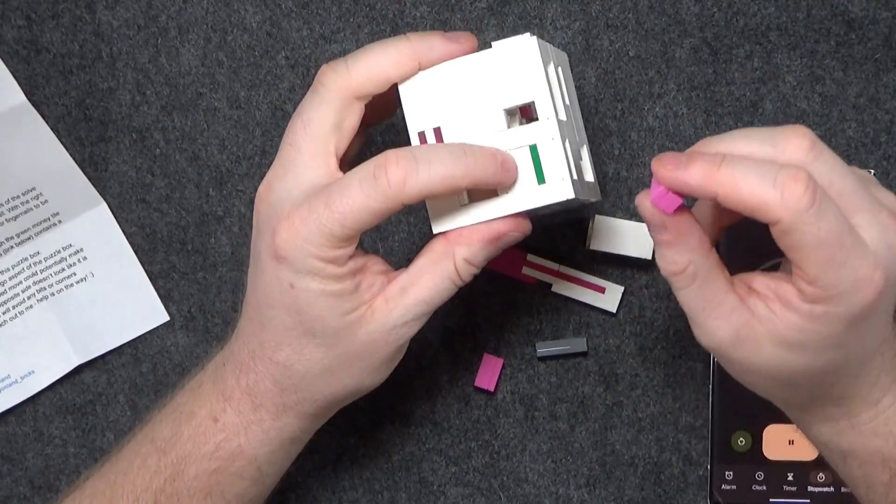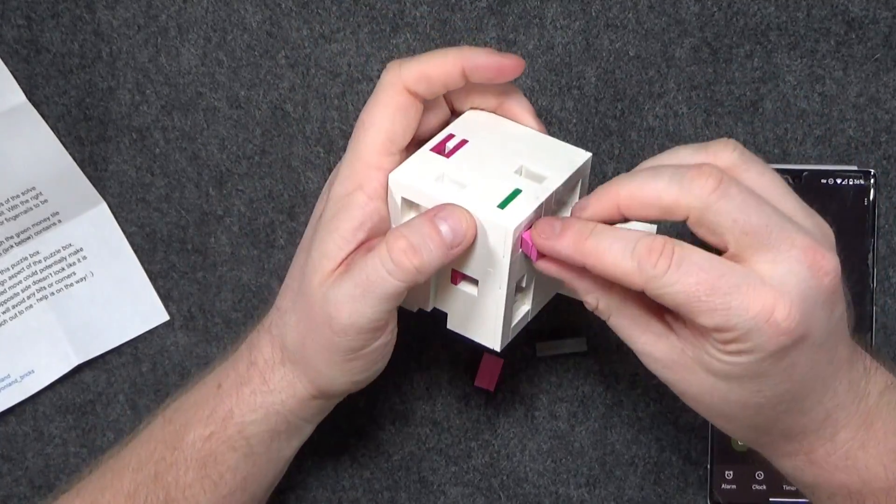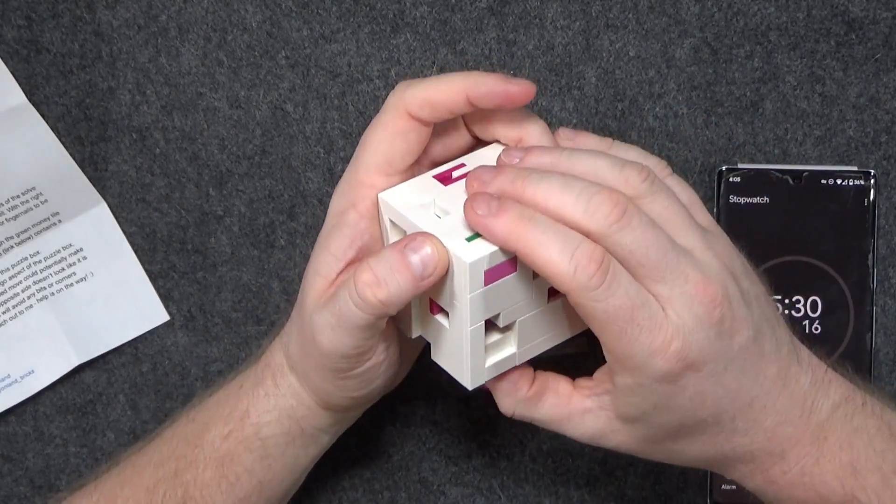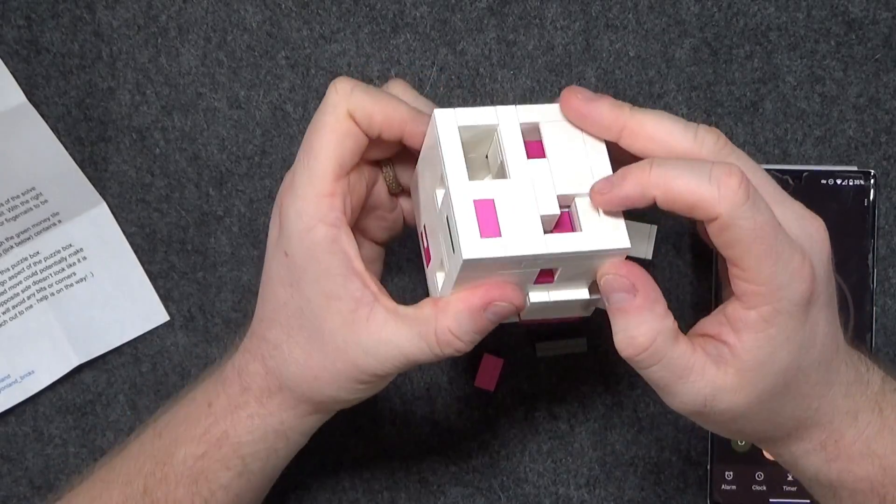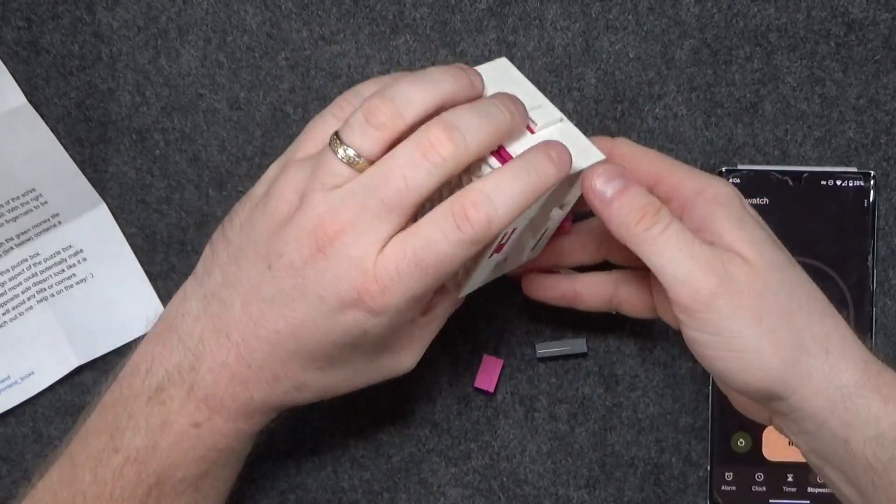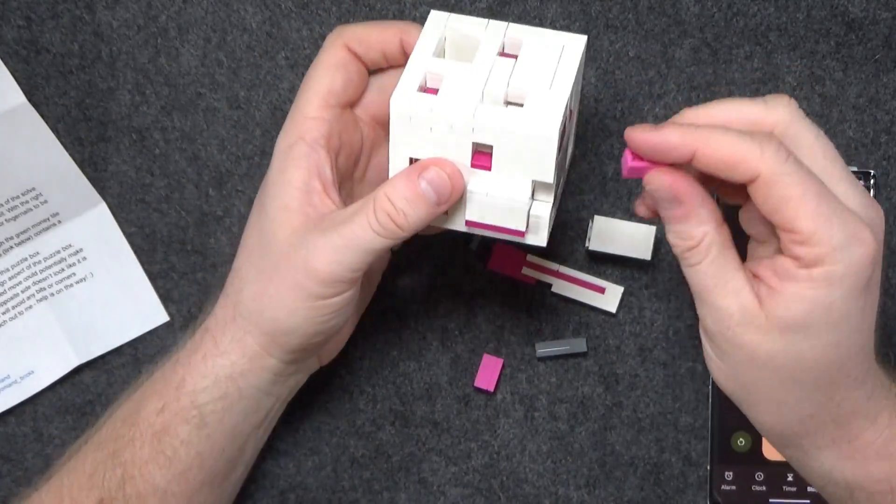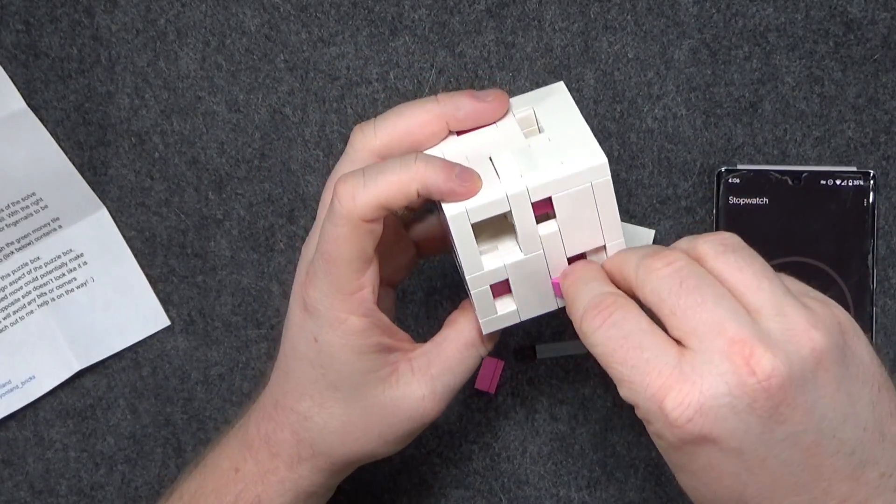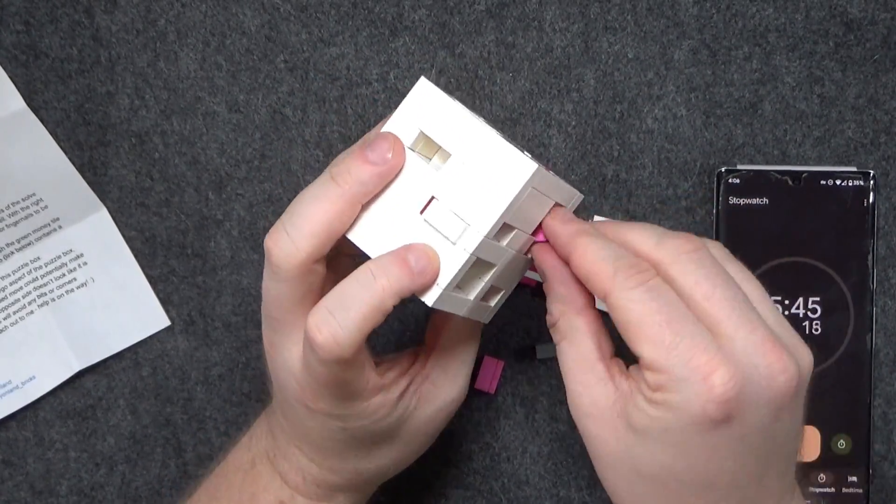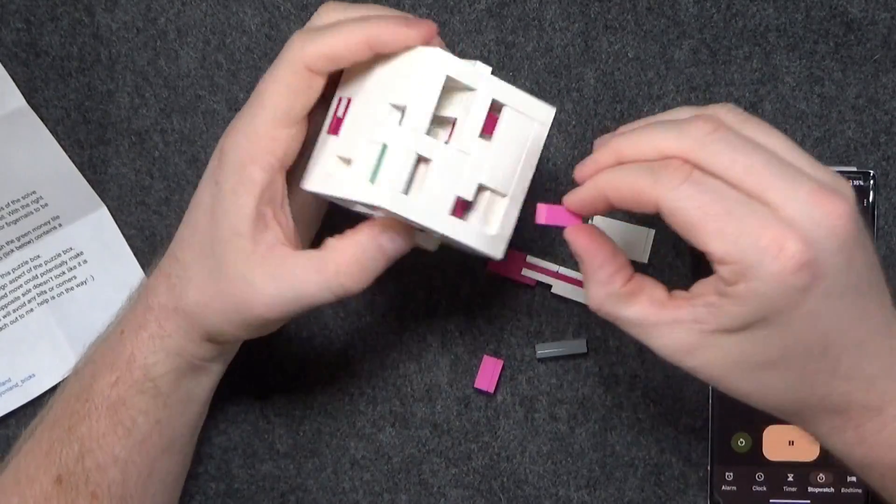So now our last thing is to get this out. We're gonna have to use this as leverage somehow. There's a chamber, like, right here. So I think I need to put this down in there. Does it slide this way?